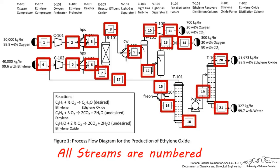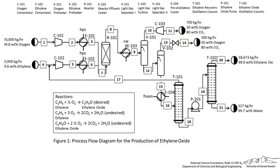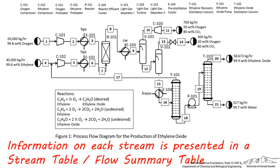All chemical simulation packages, including ChemCAD and Aspen, keep track of the physical properties of each of these streams, including flow rate, temperature, pressure, composition, and other information in a stream table. This table is a required element for every process flow diagram, since it quantitatively describes how the physical properties and composition are changing as we move through the process.